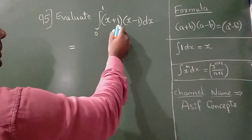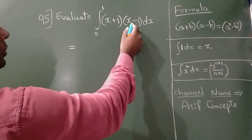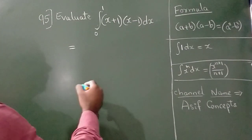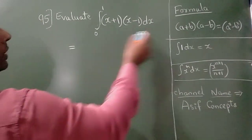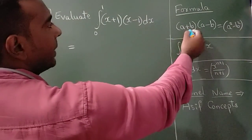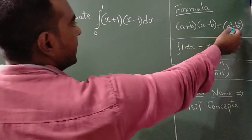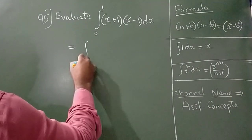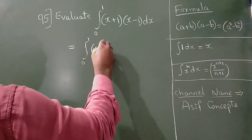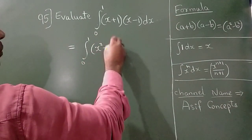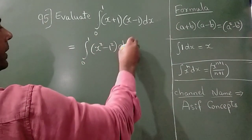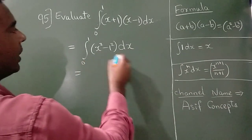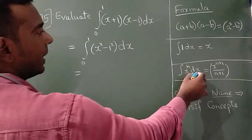Integration of (x+1)(x−1). Using the identity a² − b², I can write this as x² − 1 dx. Now applying the formula.